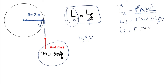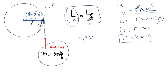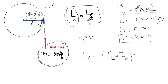So R here is just the radius of the merry-go-round. The initial angular momentum is just the angular momentum of the kid, because the merry-go-round is initially at rest. The final angular momentum is the moment of inertia of the merry-go-round plus the moment of inertia of the kid, times the final angular velocity.